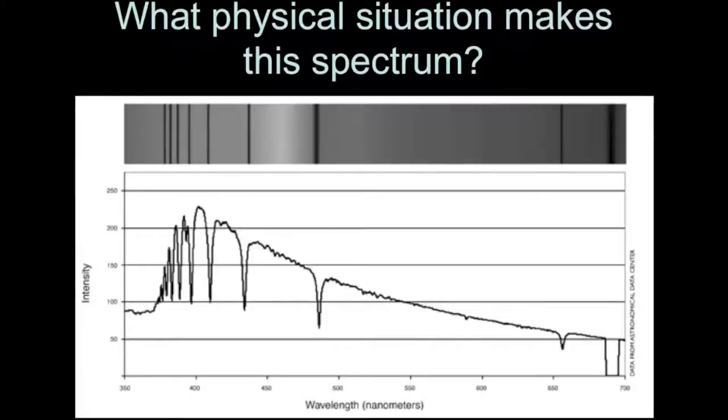So here we have a photographic spectrum and its corresponding spectral curve for a particular star. On the top we've got the spectrum which is the photographic spectrum. It looks like an emission across all the different wavelengths except for certain dark lines.